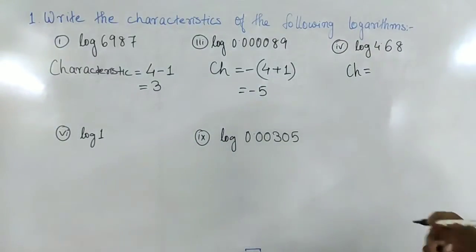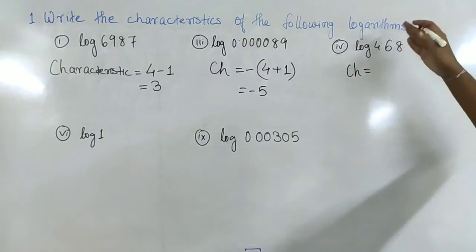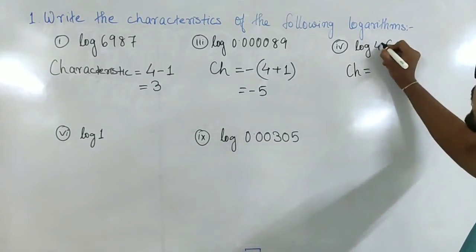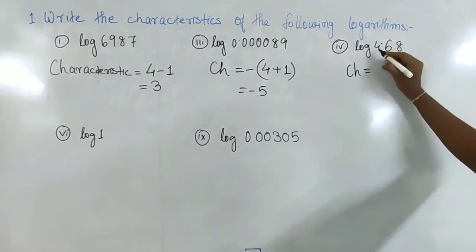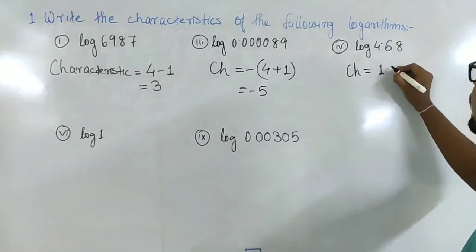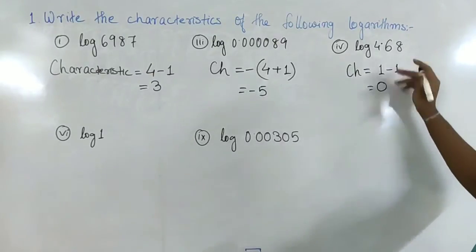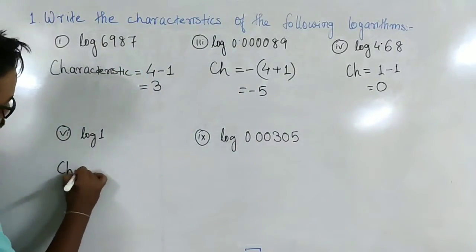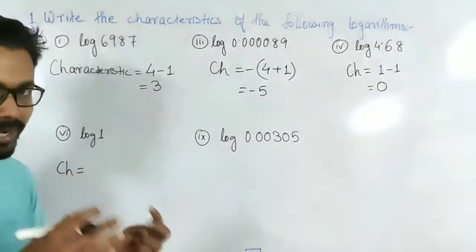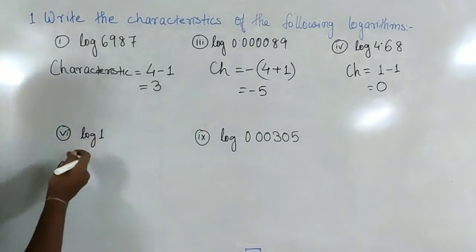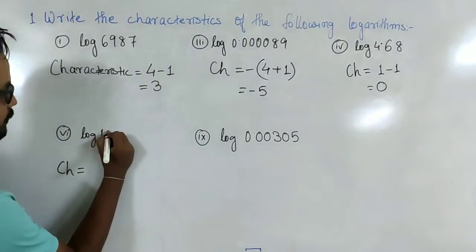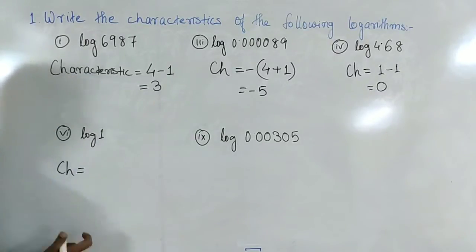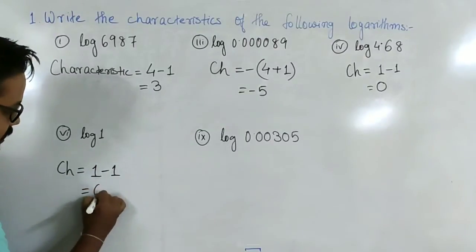For 4.68, the number is greater than 1. We count the digits before the decimal point — there is only 1 digit before the decimal point. So the characteristic is 1 minus 1, which equals 0. Similarly, for log of 1, there is 1 digit before the decimal point, so the characteristic is also 1 minus 1, which is 0.